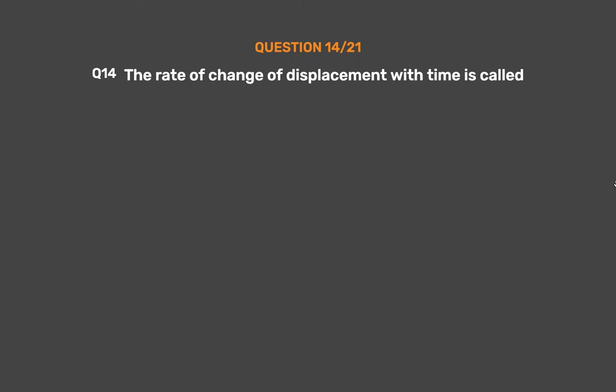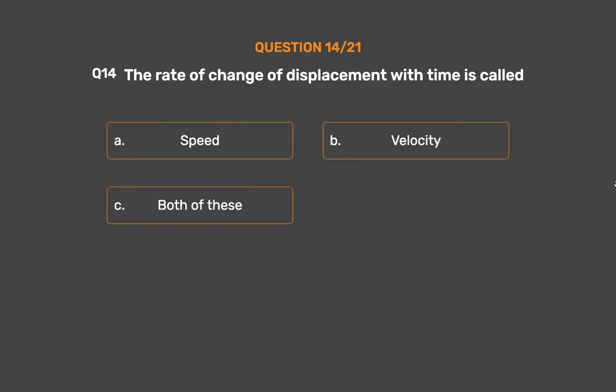Question No. 14. The rate of change of displacement with time is called. Option A: Speed. Option B: Velocity. Option C: Both of these. Option D: None of these.